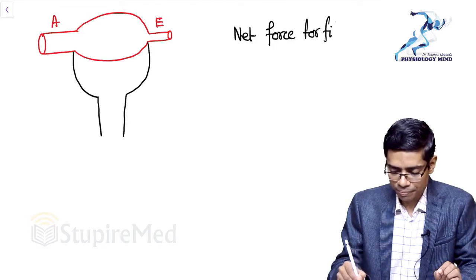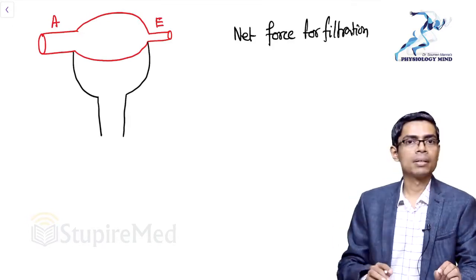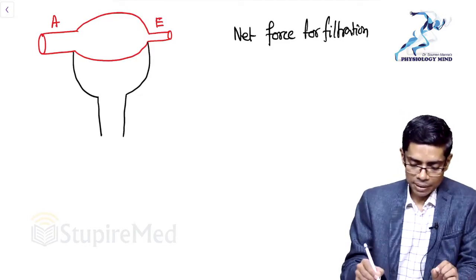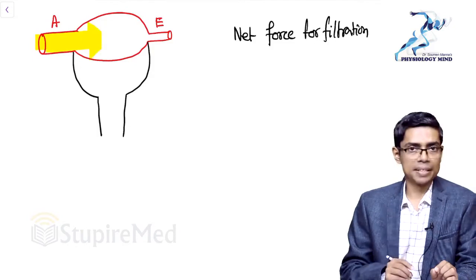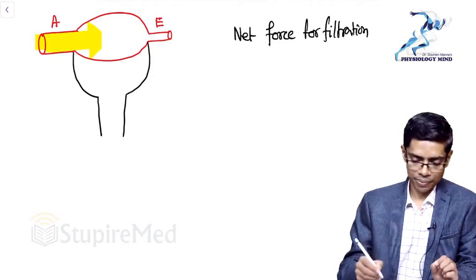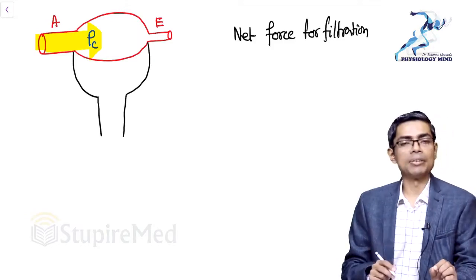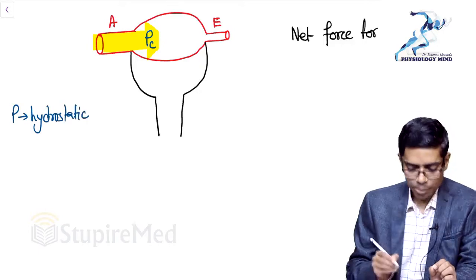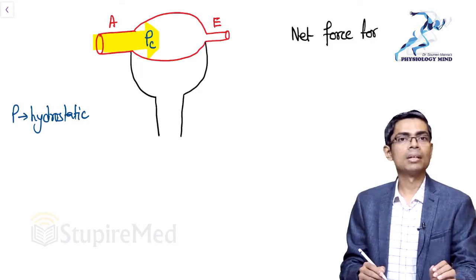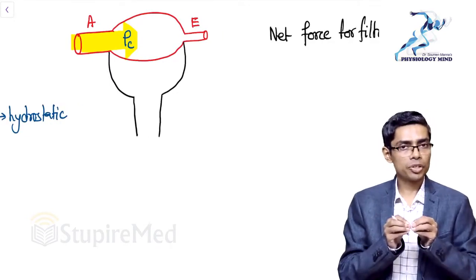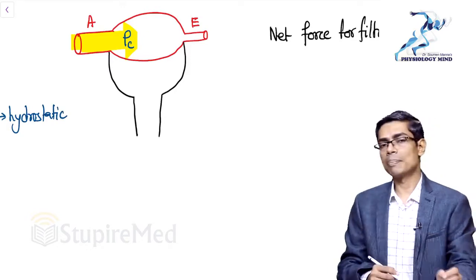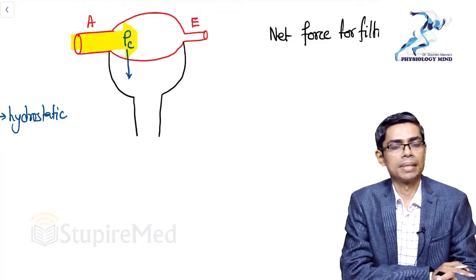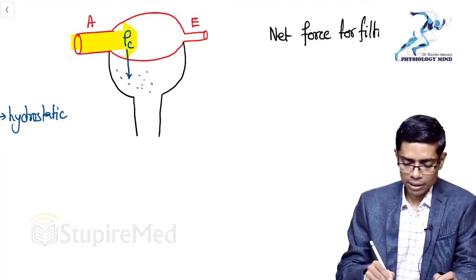This filtration depends on a force known as the Starling forces. Whenever blood or water is flowing in the capillary region, it will have some hydrostatic pressure — denoted as Pc, where P stands for hydrostatic pressure and C for capillary. Hydrostatic pressure always tries to push water into the other compartment, so capillary hydrostatic pressure will push water from the capillary into Bowman's capsule.